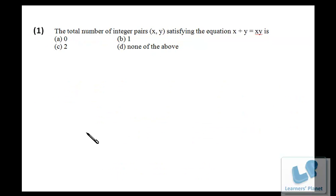Here we have a problem from CAT 2004. We have to find out the total number of integer pairs (x, y) satisfying this equation: x + y = xy. Now what you do, you just find out the value of x in terms of y or y in terms of x.